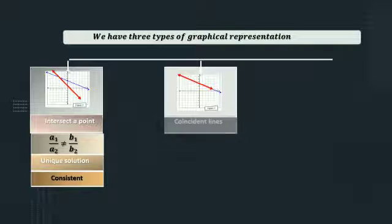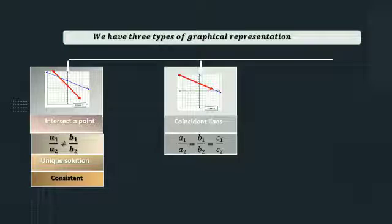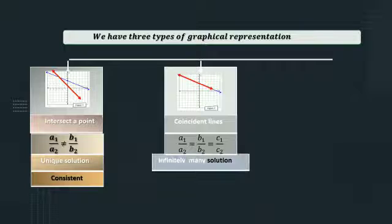In the second type, lines are coincidental. The ratio a1 by a2 is equal to b1 by b2 is equal to c1 by c2. It has infinitely many solutions.